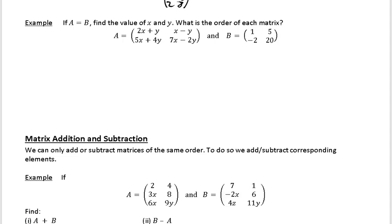So first of all, the order of this matrix, A has got two rows and two columns, so it is a 2 by 2. B is two rows and two columns, so it's a 2 by 2. So just write that in first. A is a 2 by 2 and B is a 2 by 2. They both have the same order. So both the same.